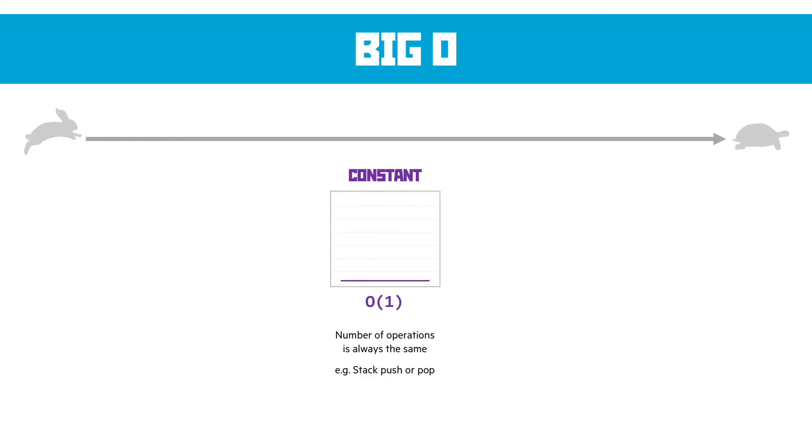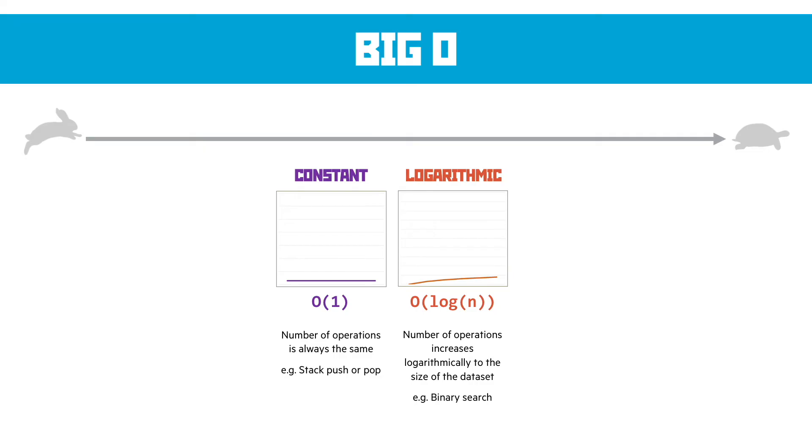Our next best case scenario is logarithmic. We illustrate this as big O log N. Now if you understand logarithms, they're almost the inverse of exponentials in that as N increases, the size of the change in logarithm decreases. So it's increasing all the time, but the difference is changing every increment of N. So we say here that the number of operations increases logarithmically to the size of the data set. An example of this could be binary search.